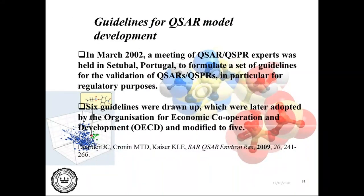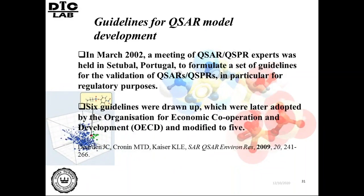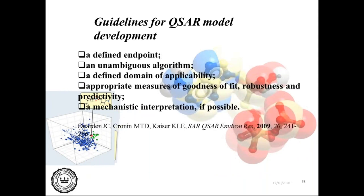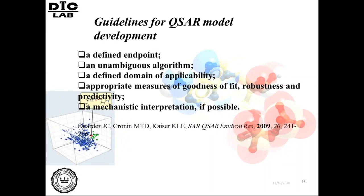In March 2002, a meeting was held in Setubal, Portugal to formulate a set of guidelines, later modified in 2004. The five guidelines state: there should be a defined endpoint, an unambiguous algorithm, a defined domain of applicability, appropriate measures of goodness of fit — robustness and predictability — and there should be a mechanistic interpretation, if possible.